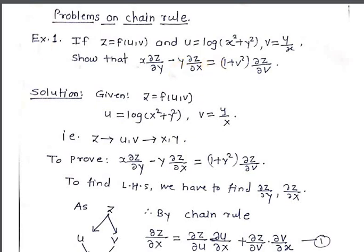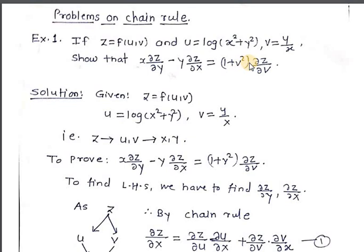Let me read it again. What is given? z is equal to f(u, v), u is equal to log of x square plus y square, v is equal to y by x. Then show that x ∂z/∂y minus y ∂z/∂x is equal to 1 plus v square times ∂z/∂v. This is the given example.